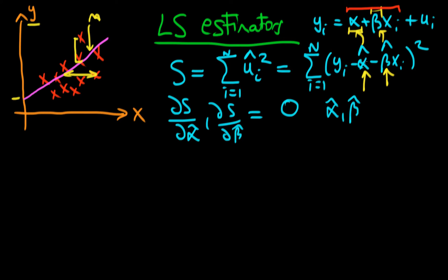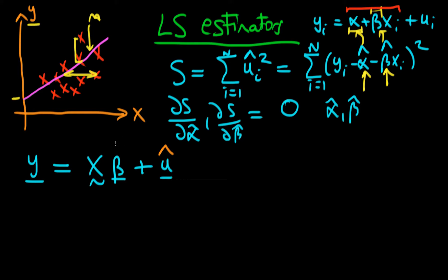In matrix form, you have a vector of your dependent variable Y determined by a matrix of all your independent variable observations X times your parameter vector β, plus the population error u. Because we don't actually observe the population error u, we minimize the sum of squared residuals — replacing u with û — and because we don't observe the population parameter vector β, we estimate it using β̂.